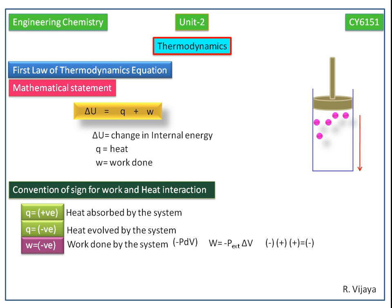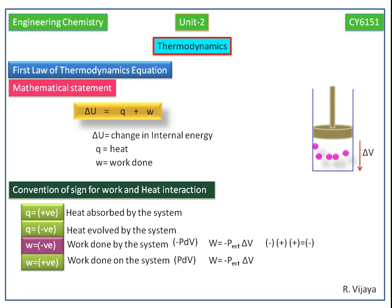If work is done on the system, the W value should be positive. Because delta V is negative - delta V equals final volume minus initial volume. Here final volume is lower volume and initial volume is higher volume. So lower volume minus higher volume equals a negative sign. Overall multiplication gives a positive sign, so work done on the system should be positive.